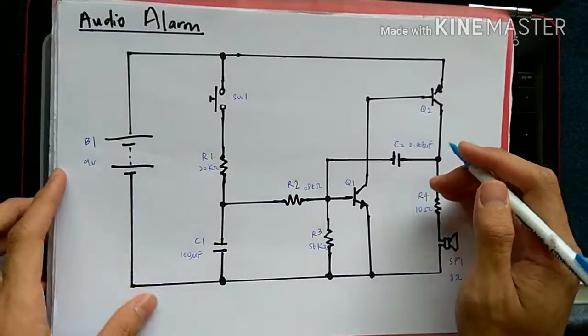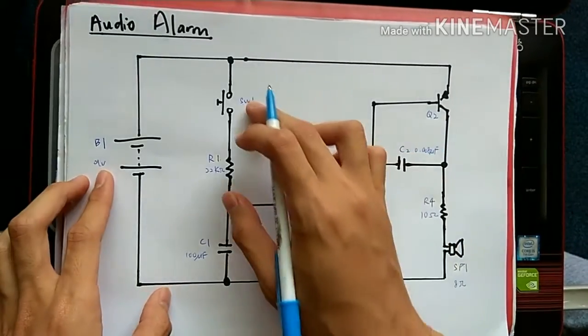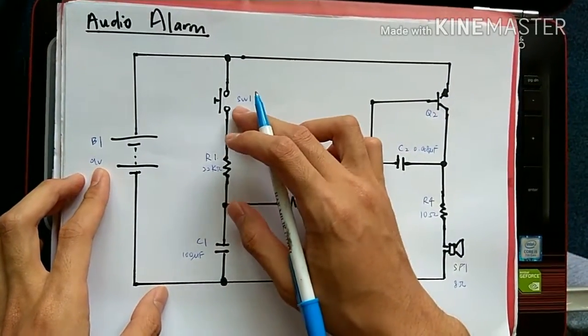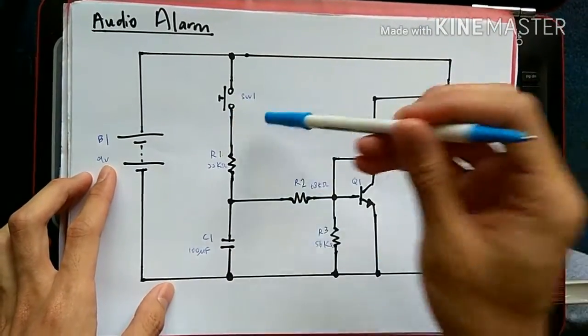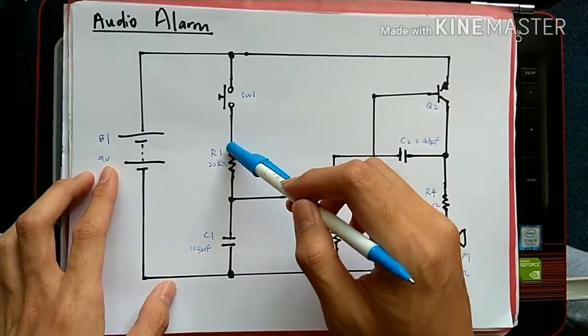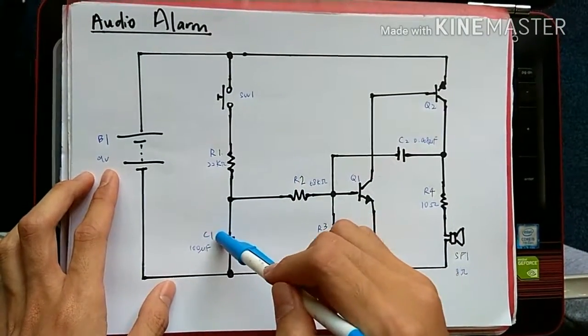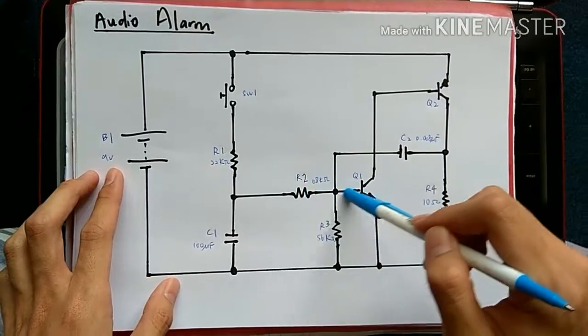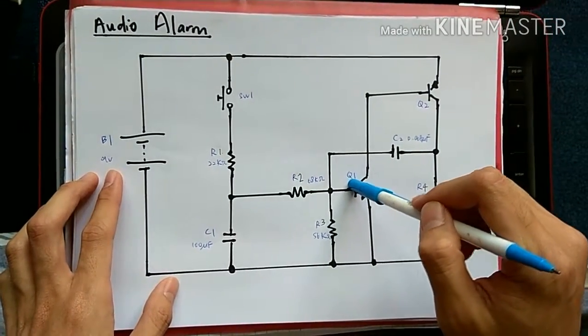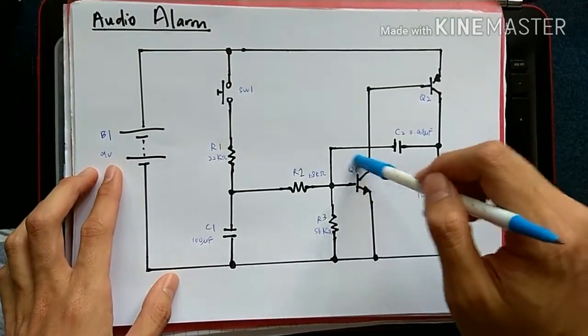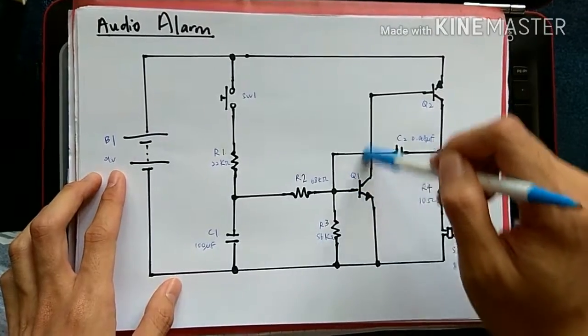The circuit starts to work when pressing S1, which will have the electric current flow to R1 to charge C1 at pin B. As a result, it will make Q1 work and make Q2 work.